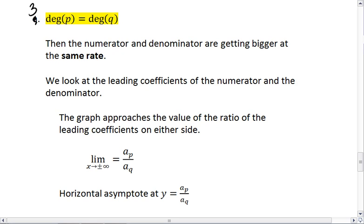In case number three, we're looking at what happens when your numerator and your denominator have the same degree. What you should realize is that the numerator and the denominator are getting bigger at the same rate.